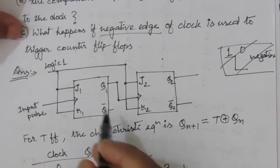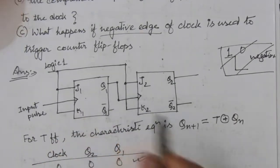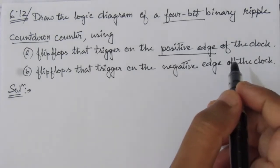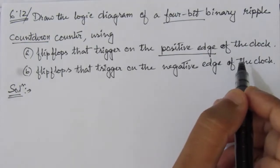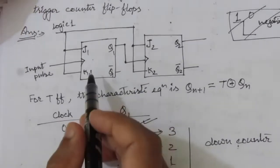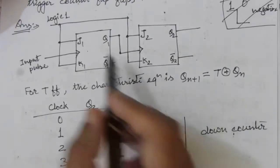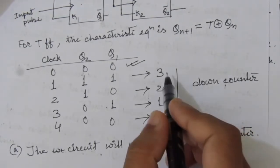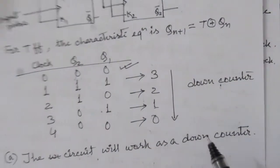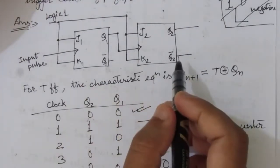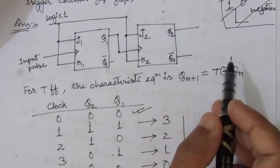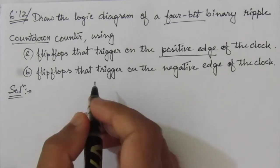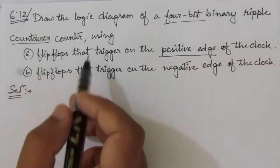It is an asynchronous ripple counter and the inputs are connected to logic 1 or a high voltage. This was a positive edge-triggered flip-flop. In the first case, we are asked to design the 4-bit ripple counter — the 4-bit binary ripple countdown counter using the positive edge of the clock. In the previous problem, we saw that while designing that circuit, we got a down counter counting in reverse: 3, 2, 1, 0. Here the circuit will be similar, but we will have 4 flip-flops for a 4-bit binary countdown counter.